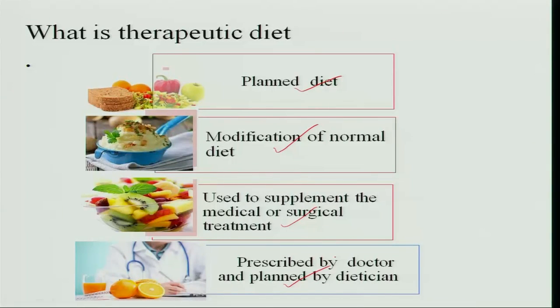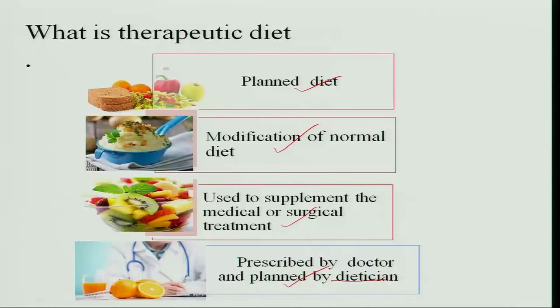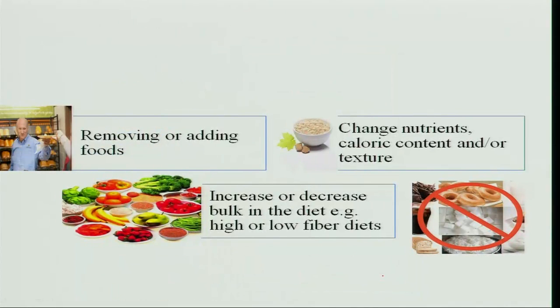The therapeutic diet is prescribed by a doctor based on the condition of the patient — whether calories need to be increased, whether protein needs to be increased — and based on that, the diet is planned by a dietitian. You can plan a therapeutic diet by adding or removing foods: whatever is not tolerated by the individual is removed, and whatever is tolerated is increased to maintain nutrient balance. For a surgically operated patient, a liquid diet is given which provides nutrients without stressing the gastrointestinal system.